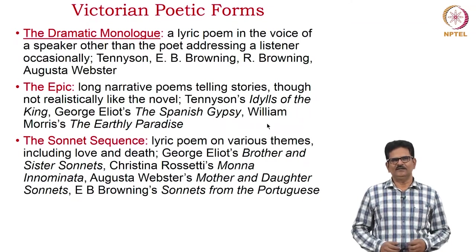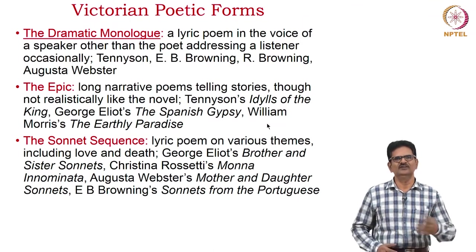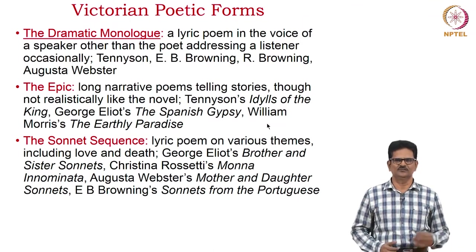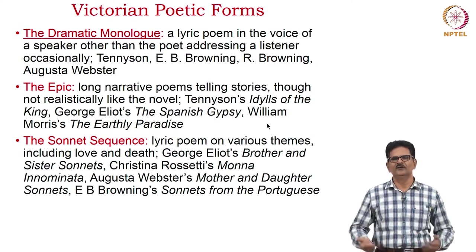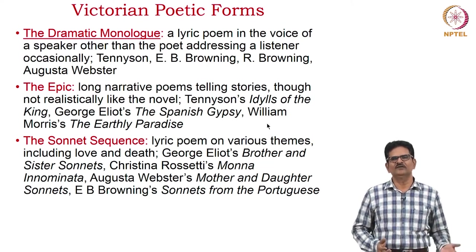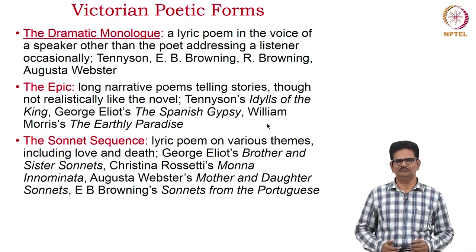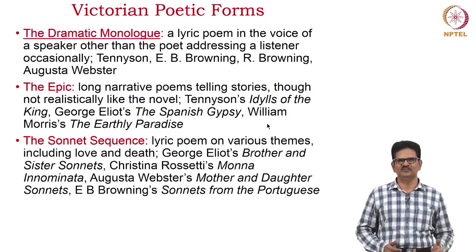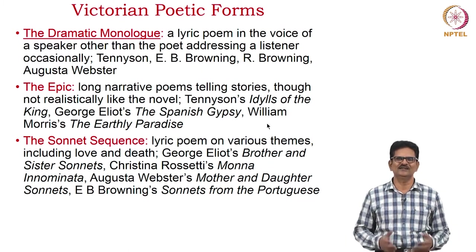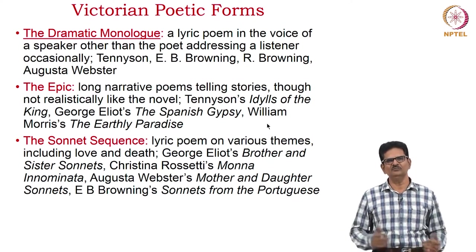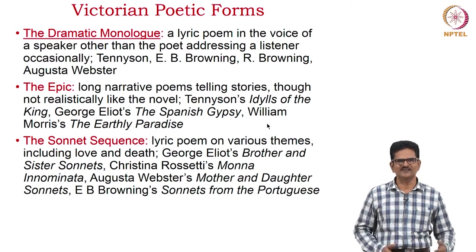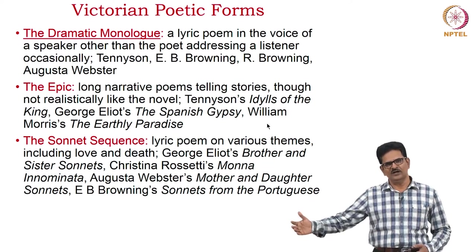Let's see the Victorian poetic forms. There were many, but we will see three of them here. One is the dramatic monologue, the second is the epic, and the third is the sonnet sequence. We must remember that we looked at this sonnet sequence when we discussed Elizabethan poetry. Now, let's begin with the dramatic monologue. It's a lyric poem in the voice of a speaker other than the poet addressing a listener occasionally. We have the examples of Tennyson, Elizabeth Barrett Browning, Robert Browning, and one more well-known feminist writer of this time, Augusta Webster. There are many others as well.